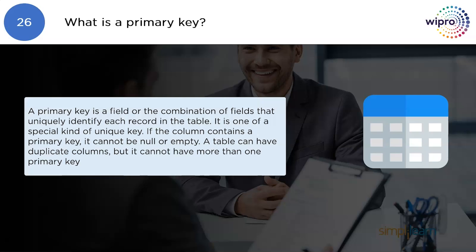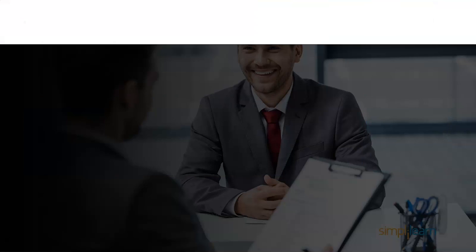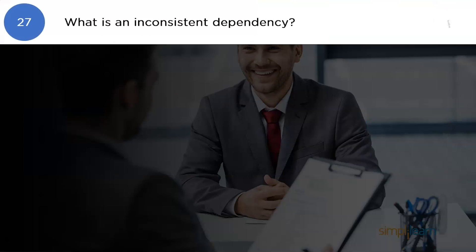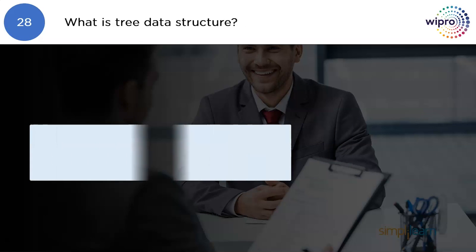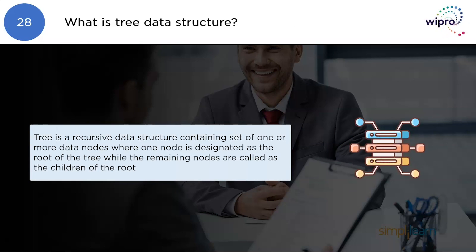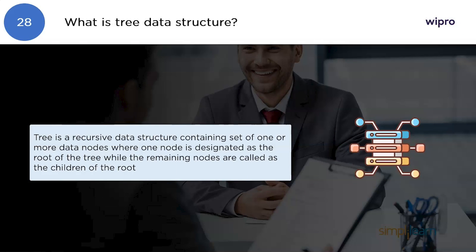What is an inconsistent dependency? An inconsistent dependency refers to the difficulty of getting relevant data due to a missing or broken path in the data.